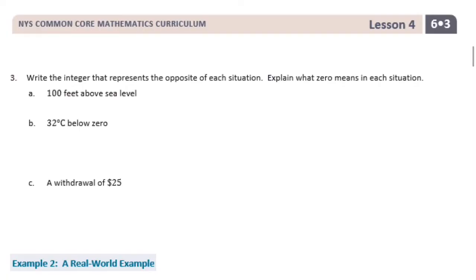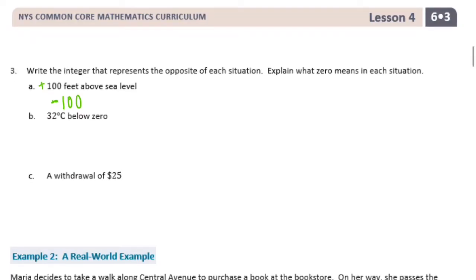Number 3: Write the integer that represents the opposite of each situation. Explain what 0 means in each situation. So, 100 feet above sea level — if you're above sea level, that's positive, so this is really positive 100. The opposite would be negative 100. And in this case, 0 would represent sea level.